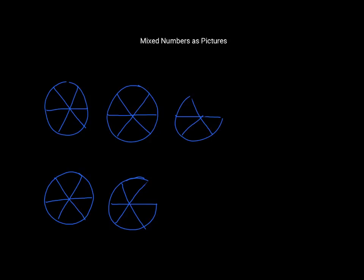For example, we might have a mixed number 3 and 1 quarter. The 3 is the whole number and the 1 quarter is a fraction. So those are mixed numbers, and if we look at our picture here, we've got two full circles and then a part.